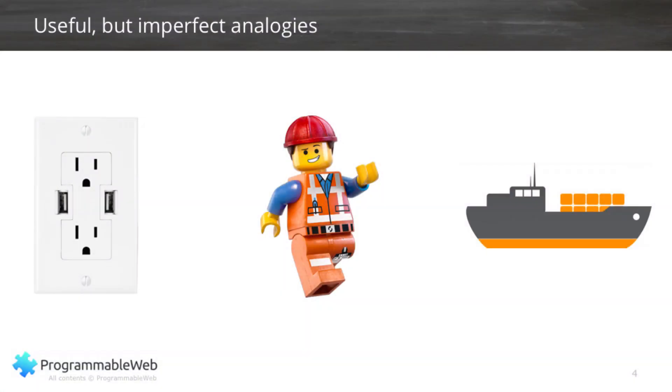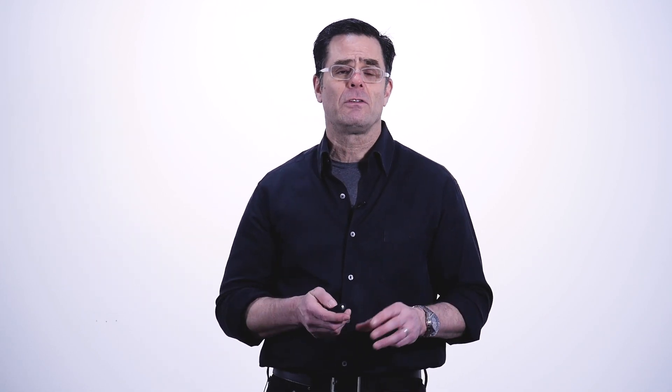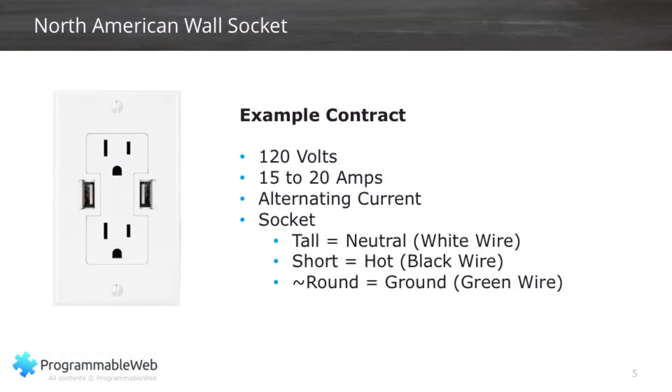In this part, we're going to talk a little bit more about the different analogies in the real world that look just like an API contract. Those analogies involve a wall socket, Lego, and what we call the intermodal shipping container, which you may have seen on cargo ships, on rail cars, or on the back of tractor-trailer trucks. A wall socket is a really good example of where there are consumers of the service and providers of the service, just like with APIs.